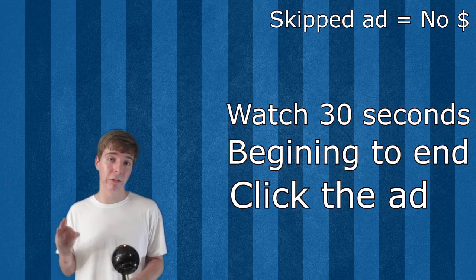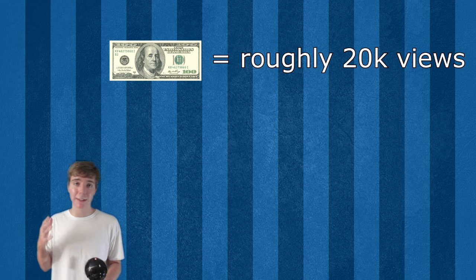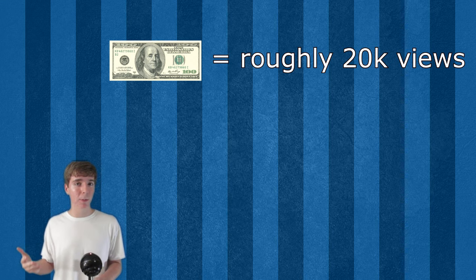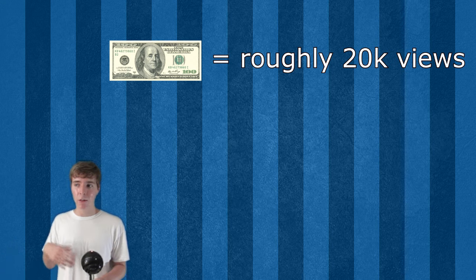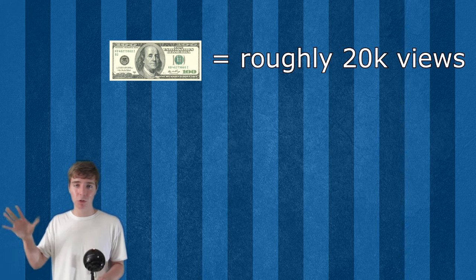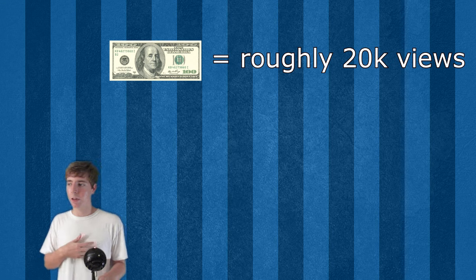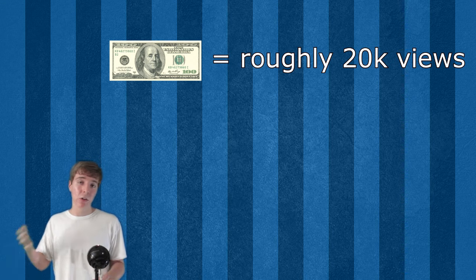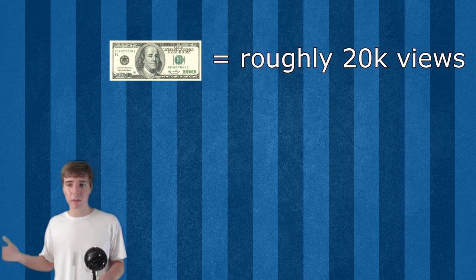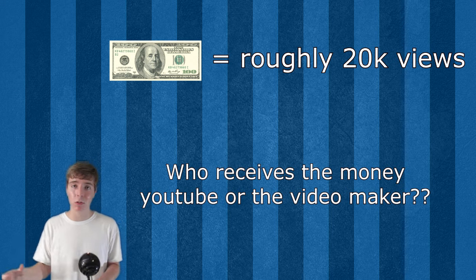That's one of the cool things about YouTube advertising — you don't pay unless someone is interested in your product. YouTube shows your ad to roughly 20,000 people for every $100 spent. Out of those 20,000 impressions, maybe 100 people click and 300 watch the full ad, using up your $100 budget. You got your brand name out there to 20,000 people.